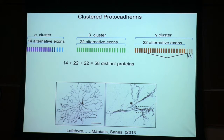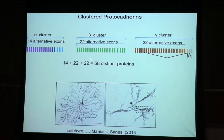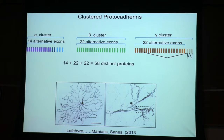In the case of vertebrates, there are actually gene clusters of protocadherins with stochastic promoter choice and different clusters. In the case of mouse, there are only 58 proteins — not 19,000. Mice, which have more complicated brains than flies, accomplish this problem with just 58 proteins. So the mechanism working in Drosophila can't be working in vertebrates. But again, if you knock out the gene cluster, you lose self-avoidance. So I want to figure out how mice accomplish the same task.